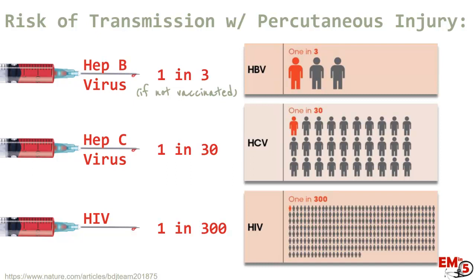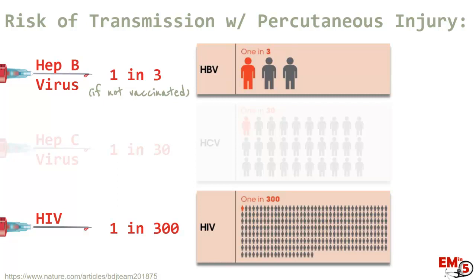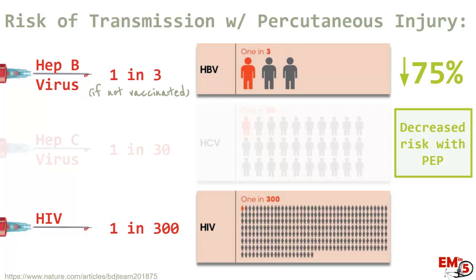With percutaneous injury — like a needle stick — hepatitis B is the highest risk at 1 in 3. However, this is for non-vaccinated personnel; if they've had the vaccine, there's basically no chance. Hepatitis C is next at about 1 in 30. HIV is about 1 in 300, and again that's for a needle stick injury. The good news is that for hepatitis B and HIV, we have good prophylaxis options — reducing transmission risk down 75% for hep B and down 80% for HIV.